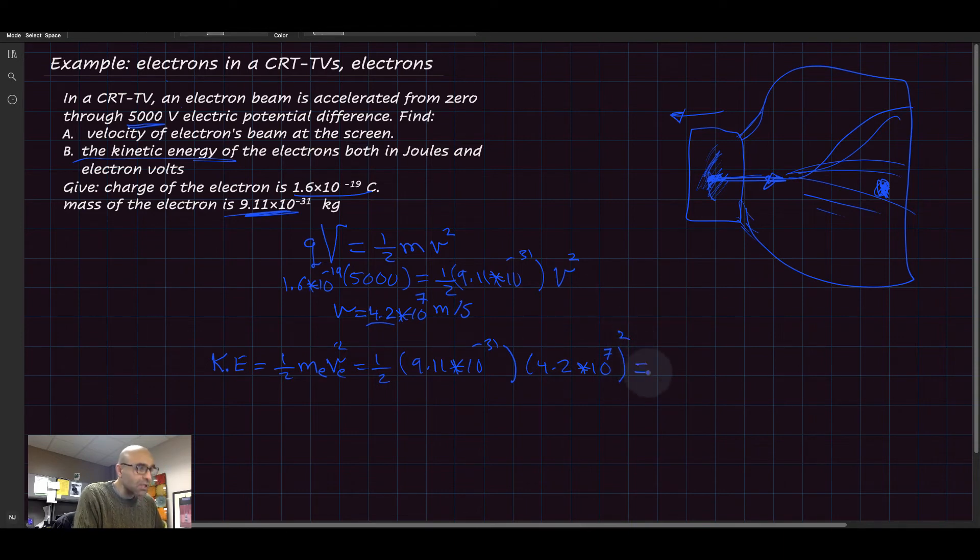If you do this calculation, you're going to find that the kinetic energy equals 8 times 10 to the minus 16 joules. This actually provides very good evidence that we need a smaller energy unit. Look, this is 8 times 10 to minus 16 joules—it's very small.